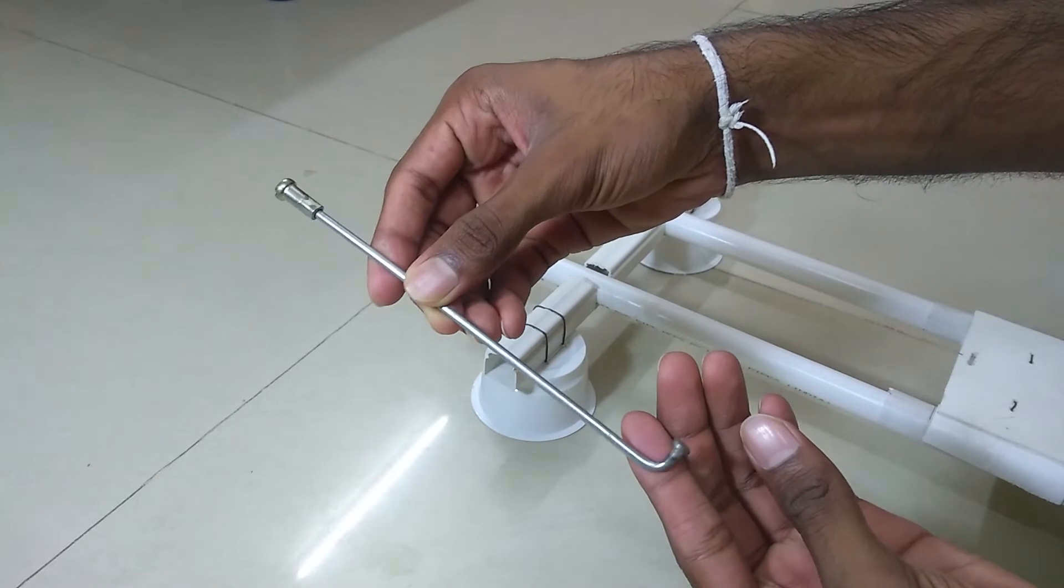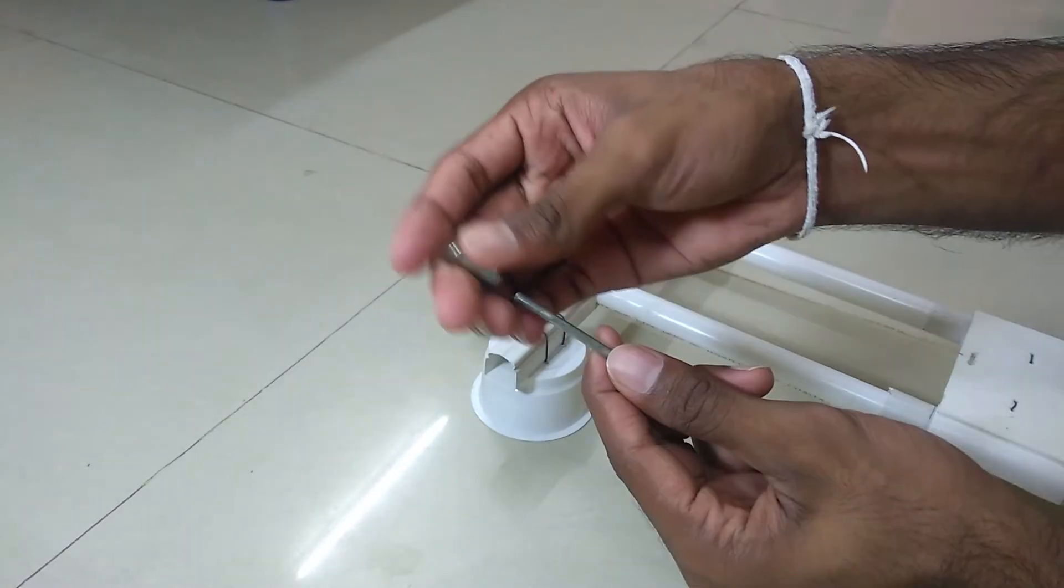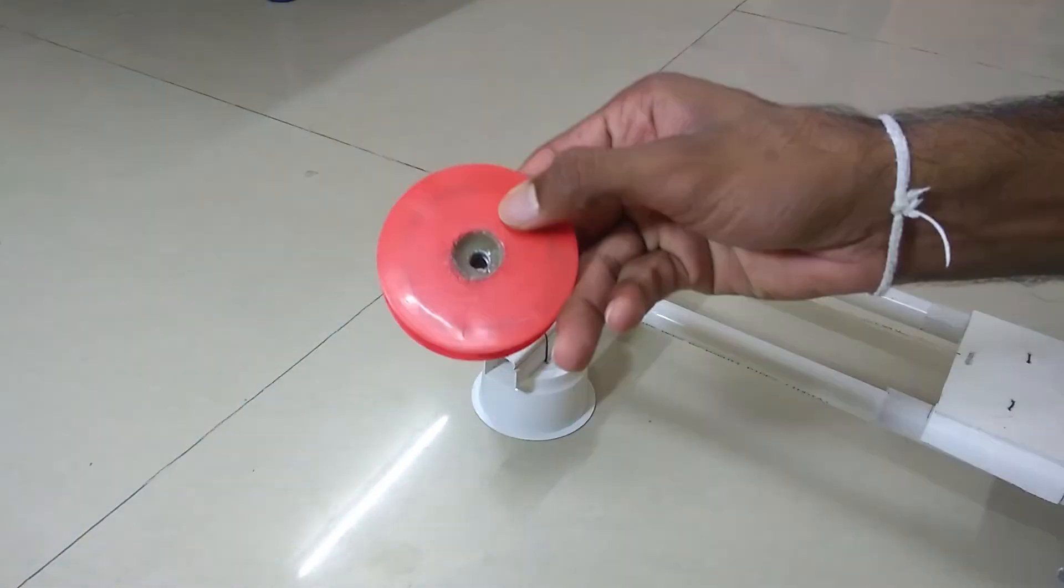Then I took a spoke from a motorbike wheel, placed the pulley through it and fixed it at the other end.